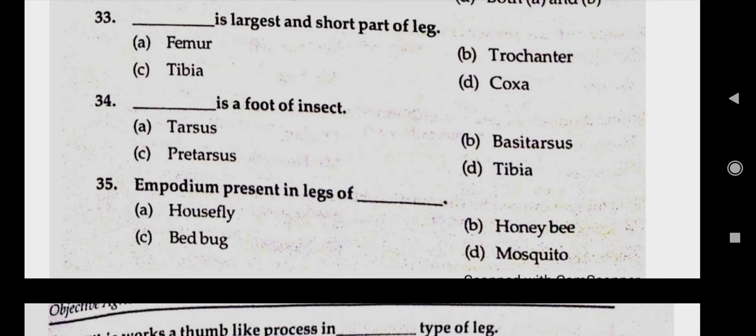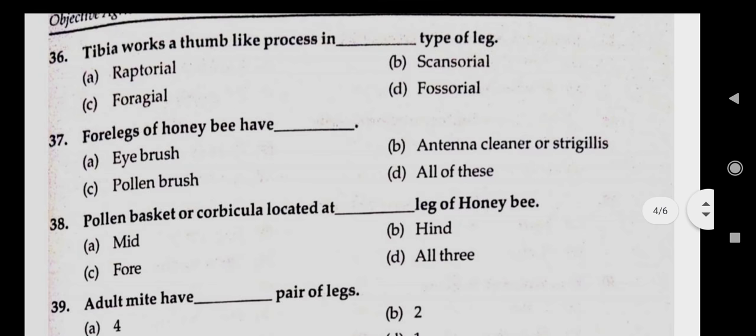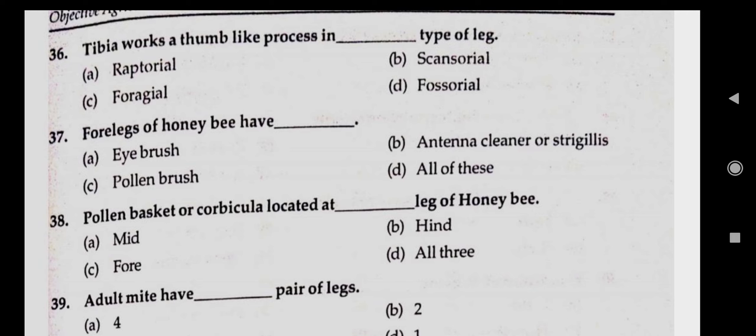Question number thirty-five: empodium present in legs. Answer A, housefly. Question number thirty-six: tibia works as a thumb-like process in dash type of leg. Answer B, scansorial.